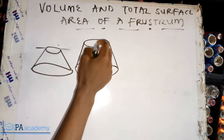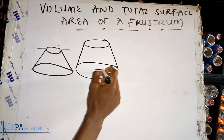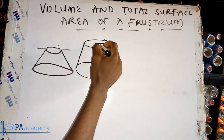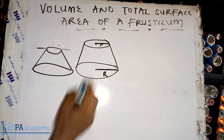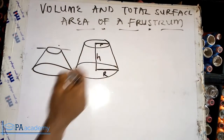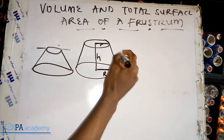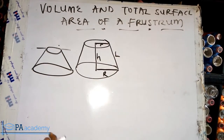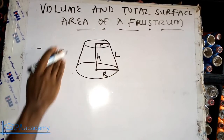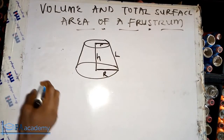With a frustum we have two radii — a bigger radius and a smaller radius. This part here represents the height of the frustum, and this part represents the slant length of the frustum. So this is how a frustum looks.